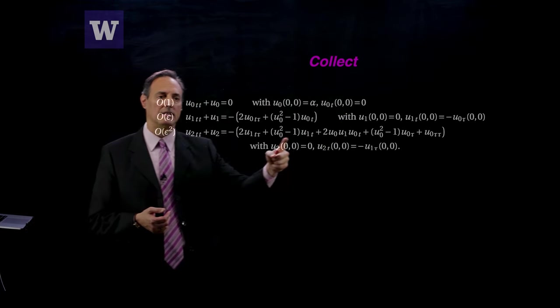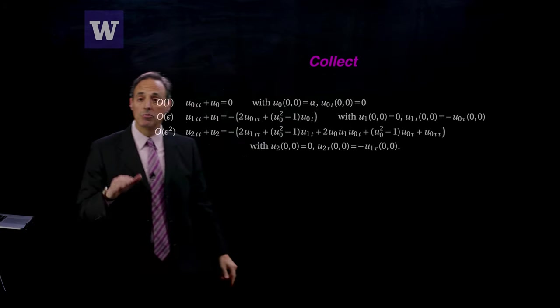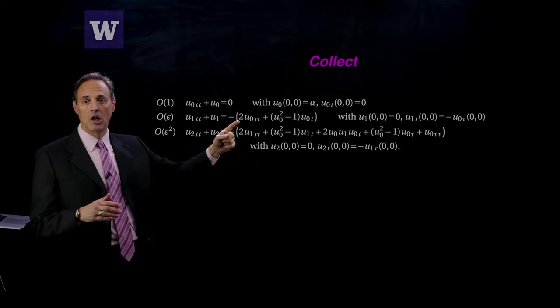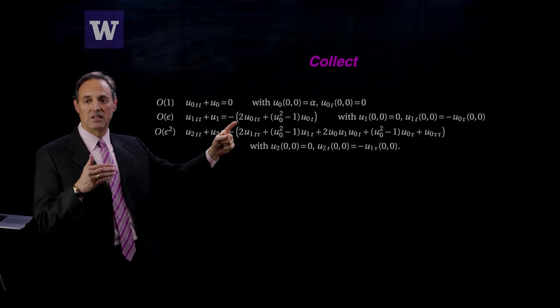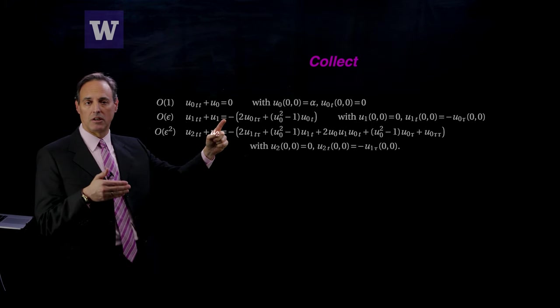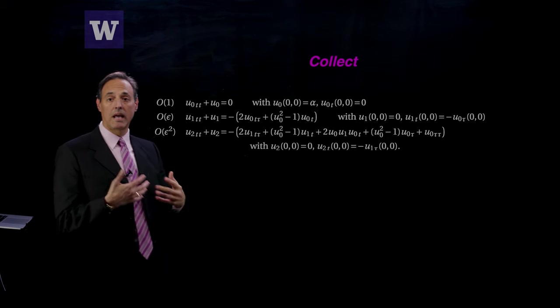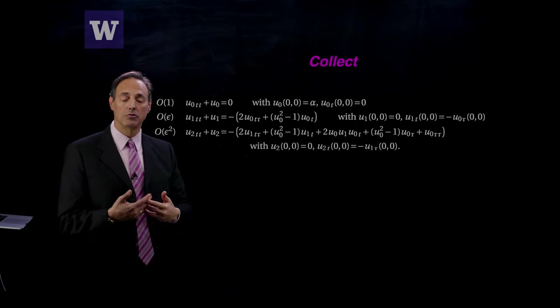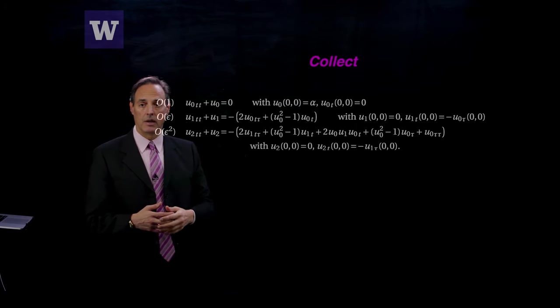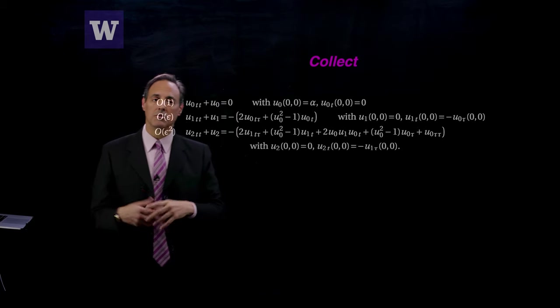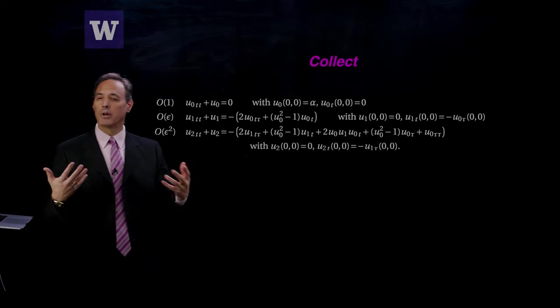And those are its initial conditions. Then you go to one higher order. Here's the right-hand side term. What you need to have happen is the right-hand side forcings—what we need is solvability to be satisfied. The right-hand side forcing terms have to be orthogonal to the null space of the adjoint operator. This operator here is self-adjoint. We're going to impose that condition to get rid of secular growth terms.